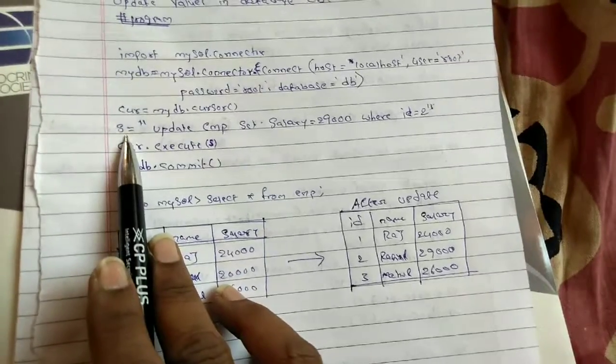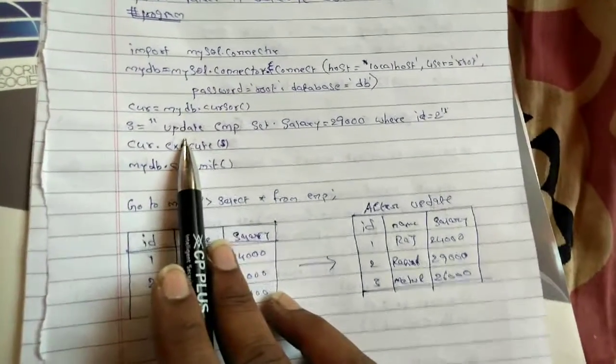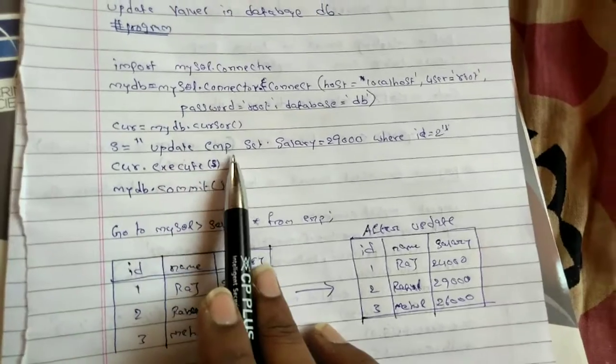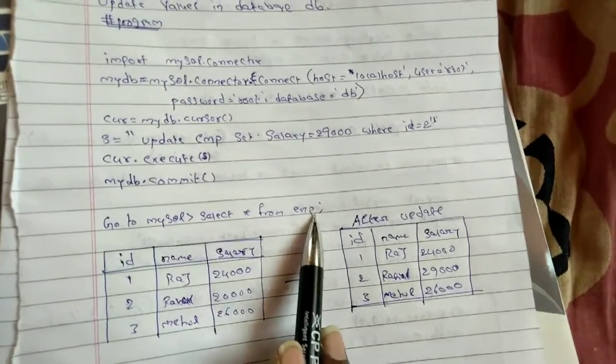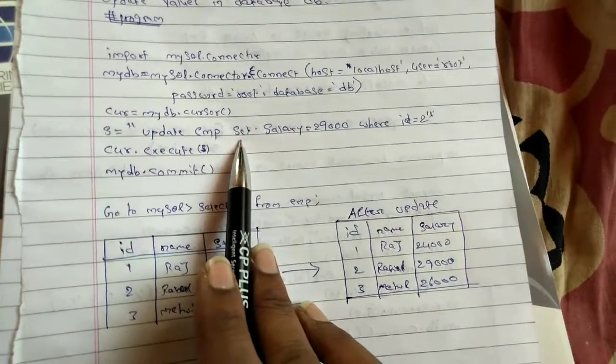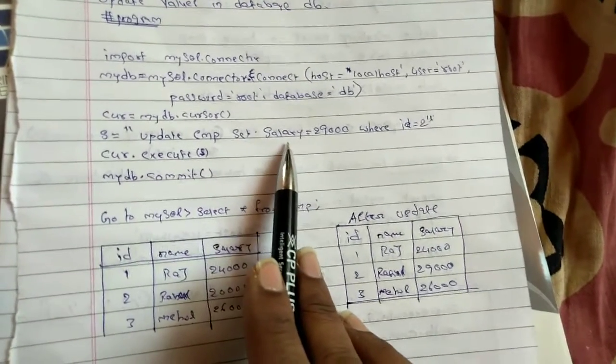Now what is this yes variable? The yes variable will have a command, that is the query is UPDATE. I am going to update the employee table, that is the table name. SET is a keyword - what it will set? Salary to 29,000.